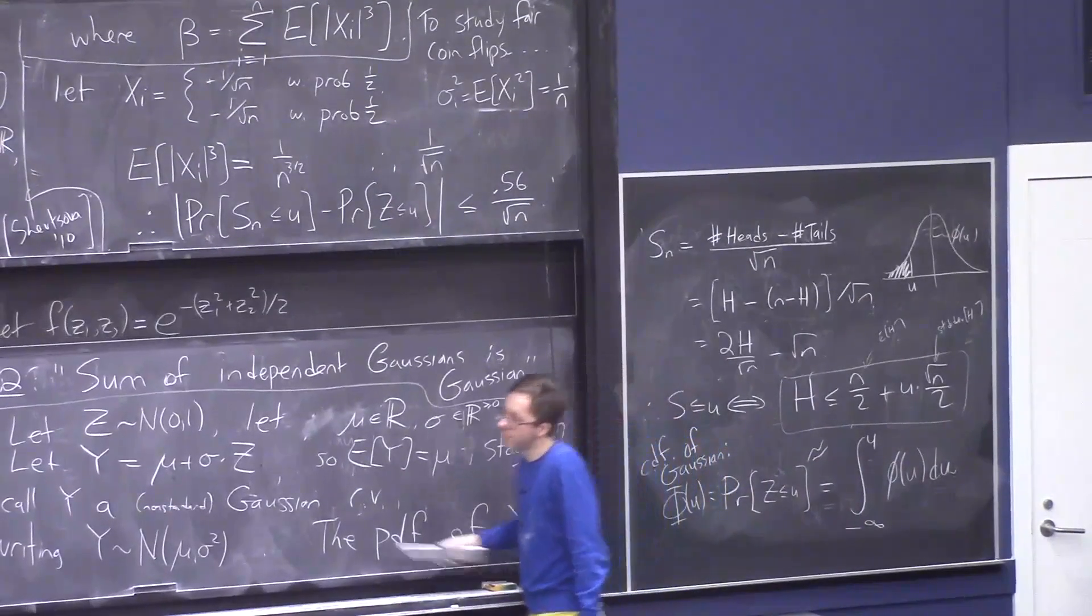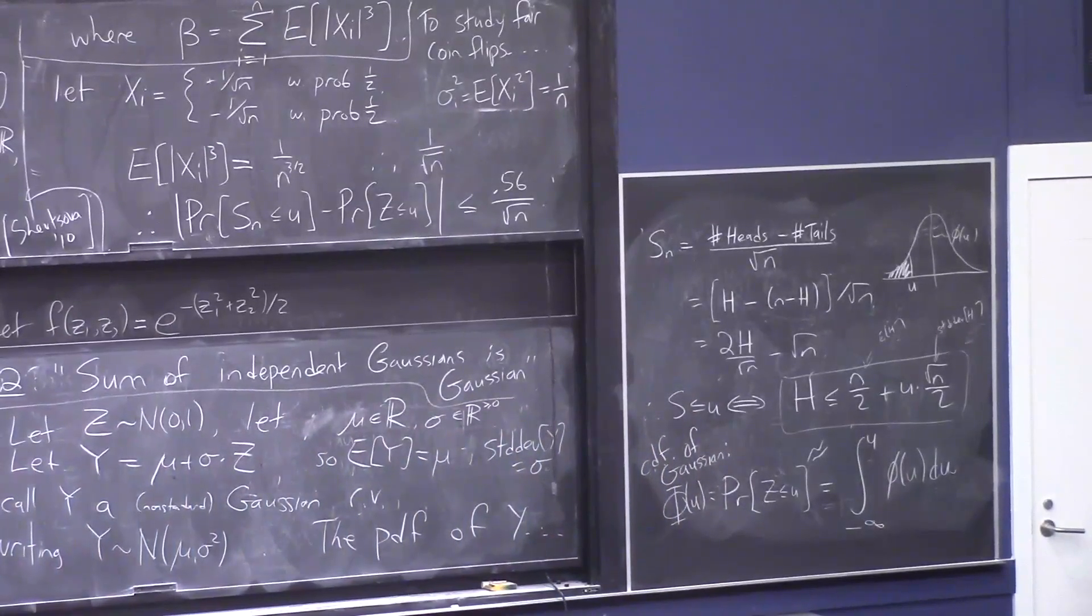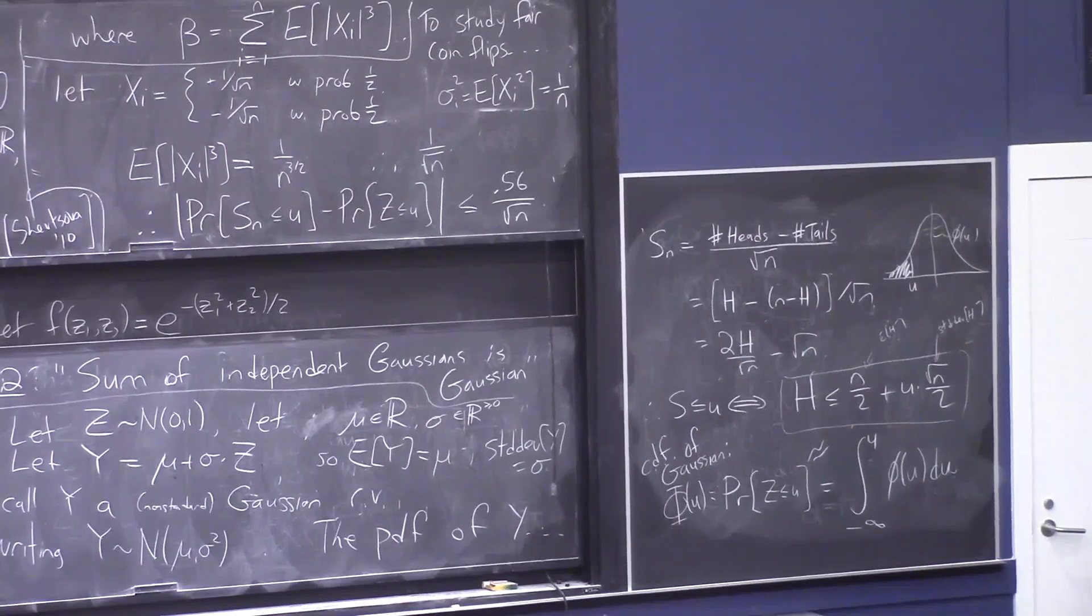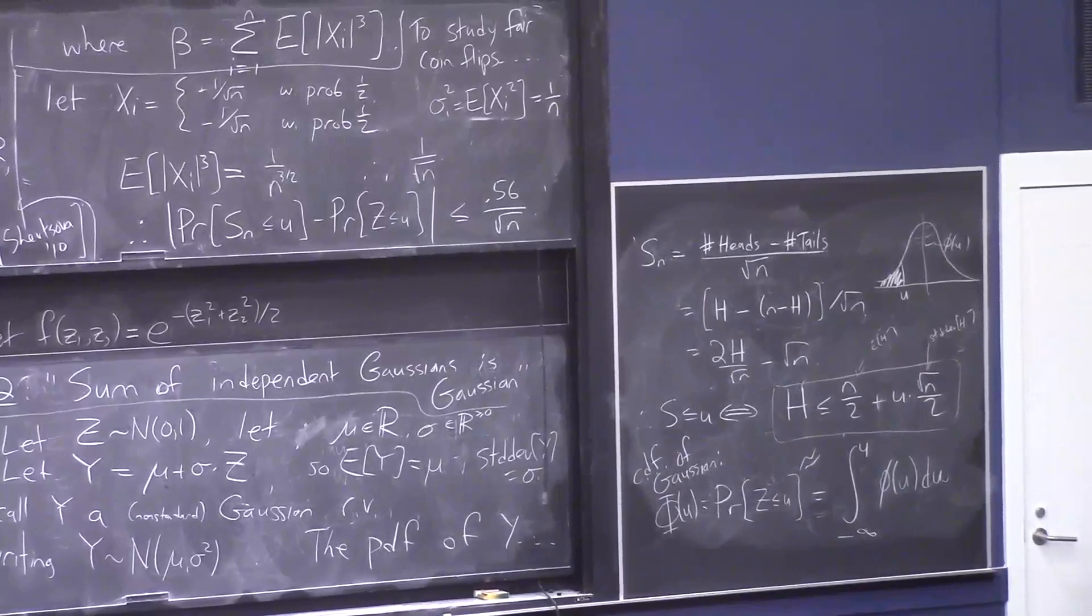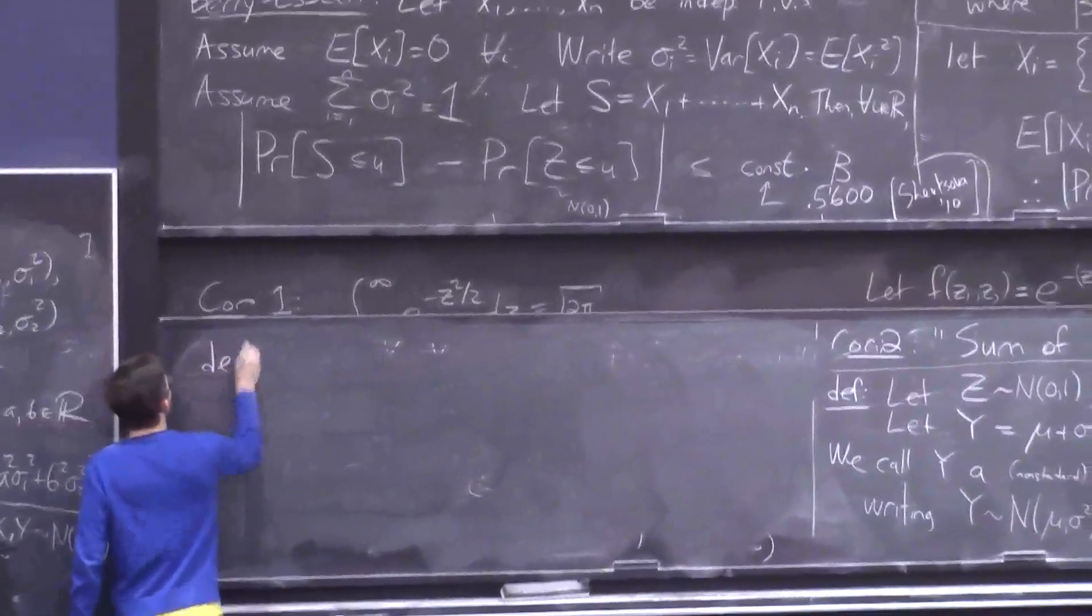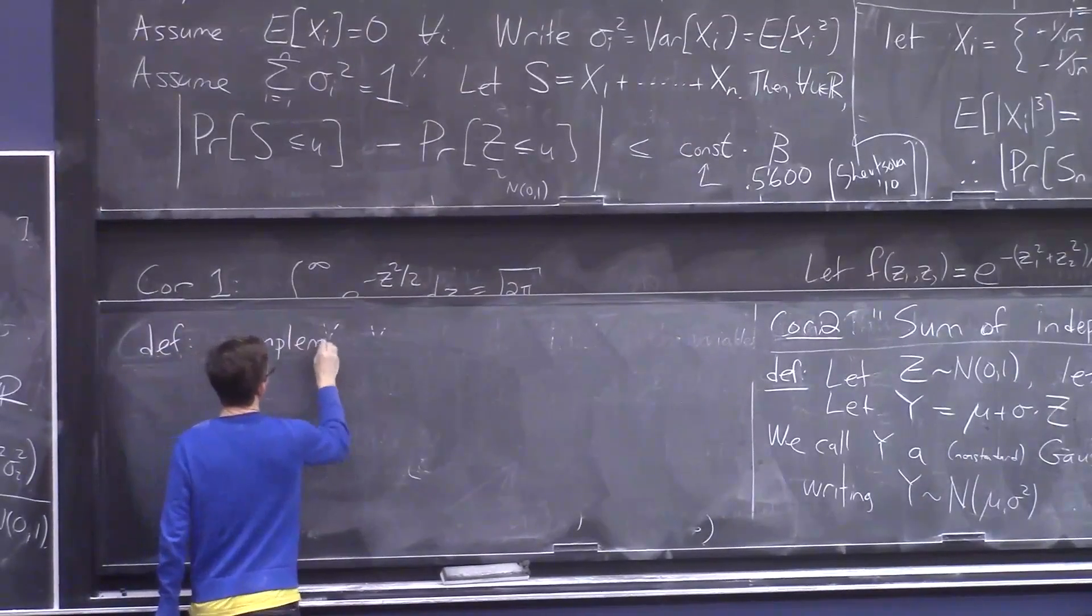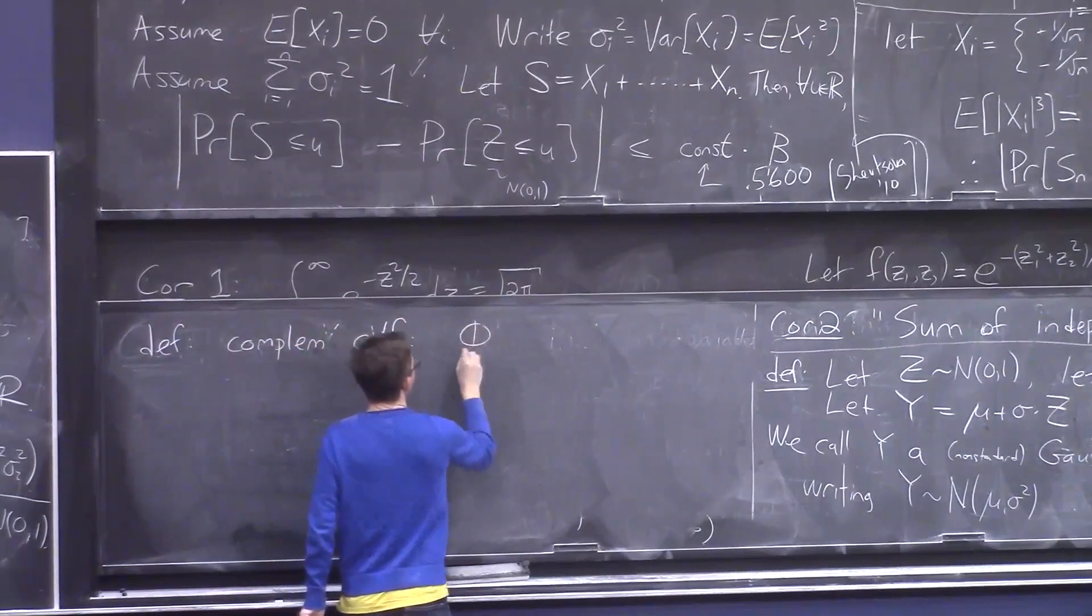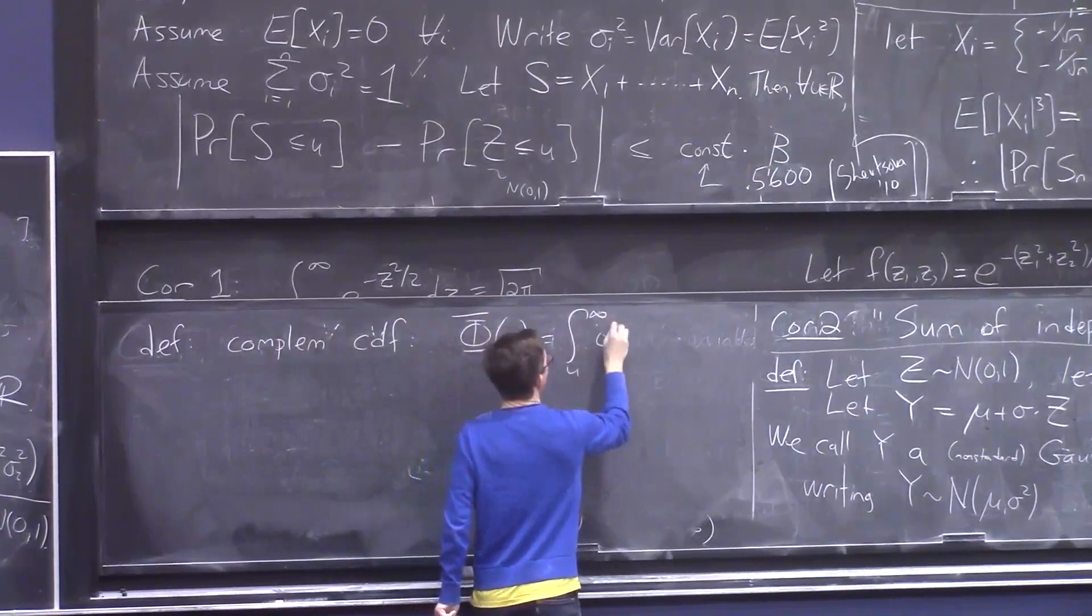And the last thing I want to tell you about is, okay, well, if u is some number, like minus 3 or 1.5 or whatever, then capital Φ of u is just some other number which you get a computer to tell you. But what if you want to know the asymptotics of it, like when u is really small or really big? Actually, because we're used to, like, asymptotics when the parameter is getting big, it's good to also define this thing called the complementary cdf of a Gaussian denoted Φ̄ of u.